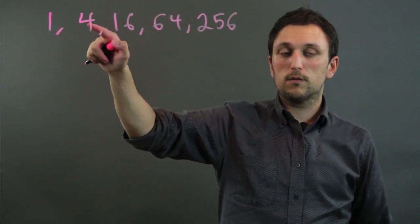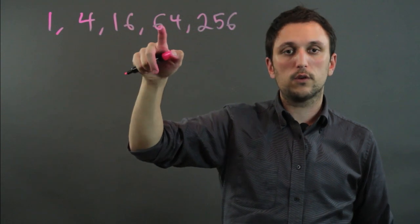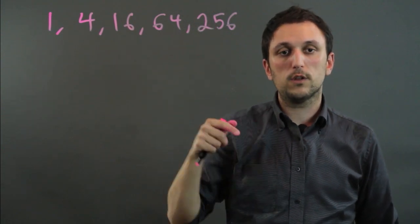1 times 4 is 4, 4 times 4 is 16, times 4 is 64, times 4 is 256.